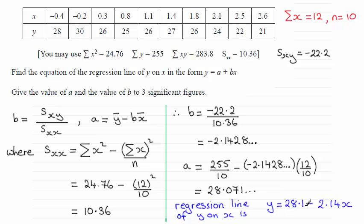So y equals 28.1 minus, don't write plus minus, okay, where we've got plus bx here. Don't write plus minus. Replace it with a negative. Okay. So it's 28.1 minus 2.14x. And there's your regression line of y on x.